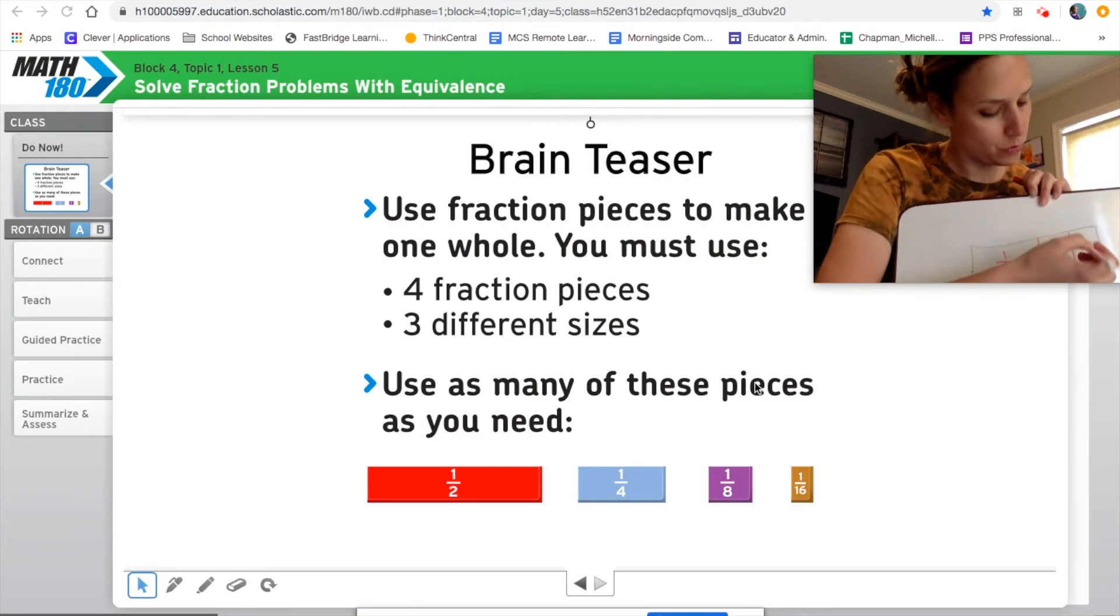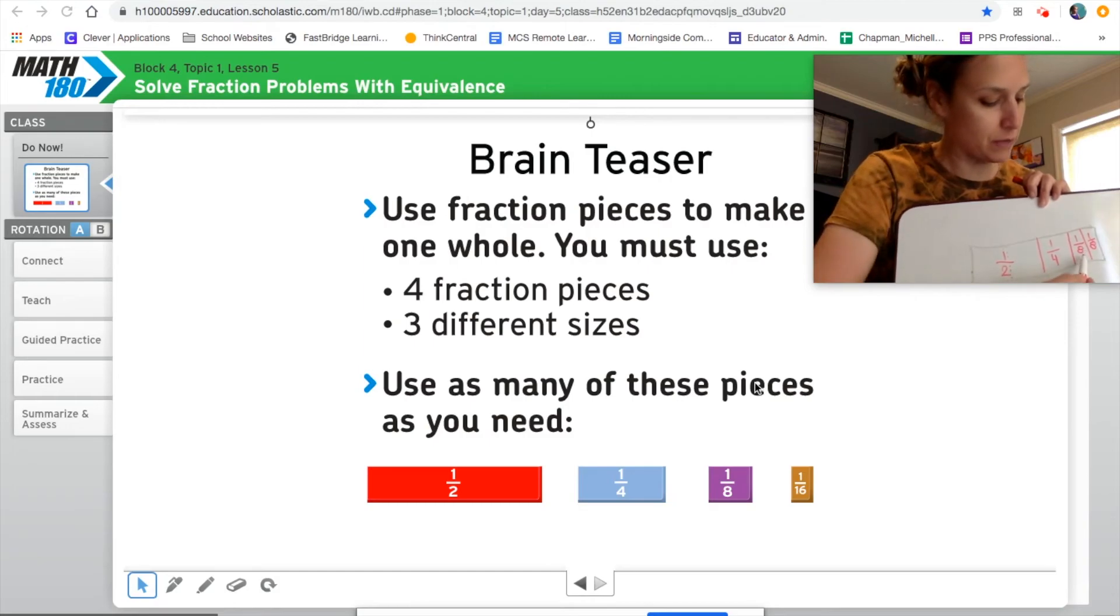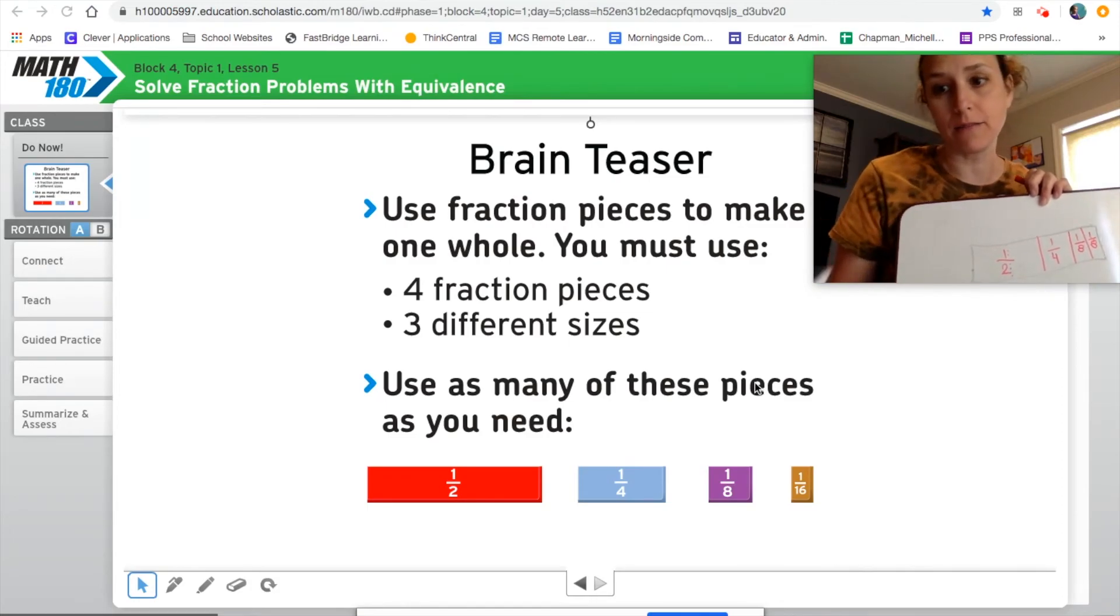And then I have to use four pieces total. I've only used two. So if I cut this one in half, half of a fourth is an eighth. And I can use two one eighth pieces. I've now used three different fractions and four different pieces. So I've met the brain teaser.